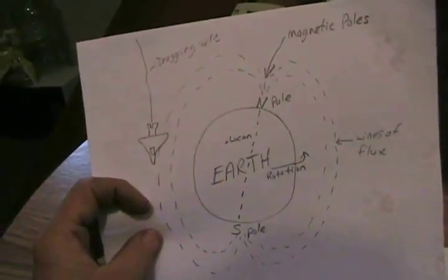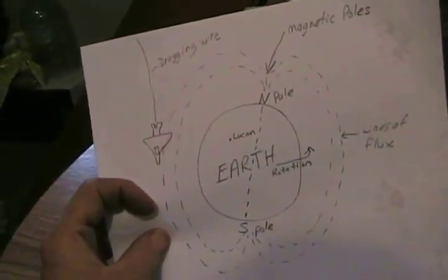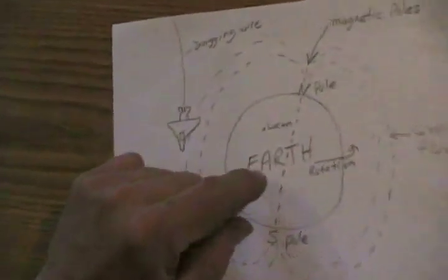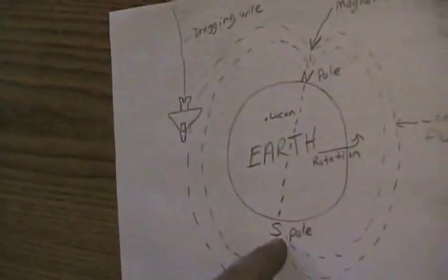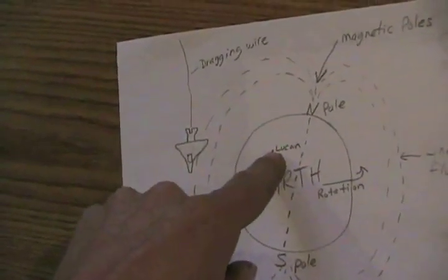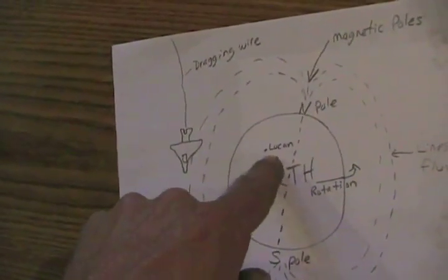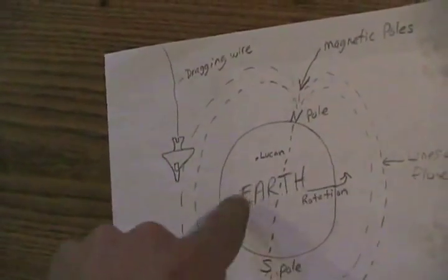So first of all, I'm going to give you a pictorial diagram explaining the basics starting from Earth. So if Earth is that circle, well Earth has a north and south pole. There's where Lucan would be, of course. Don't forget Lucan. Well, the Earth rotates.